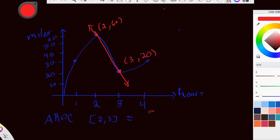So that would be 20 minus 60 divided by 3 minus 2, which would give me an average rate of change of negative 40. Now remember, the top is measured in miles, and the bottom is measured in hours. So that is miles per hour. And that would give me the average rate of change.